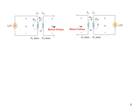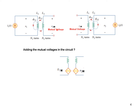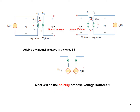The two scenarios are: source on the left side giving self-induced and mutual voltages. To show mutual voltages in a circuit, we draw diamond-shaped dependent voltage sources — V2M on the secondary side and V1M on the primary side.